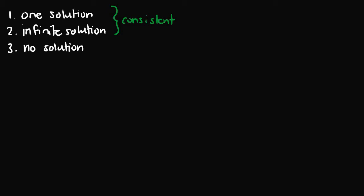In the first type — one solution — there's only one solution, so it's consistent. In the second type — infinite solutions — although there are an infinite number of solutions, it has at minimum at least one. The third type, no solution, is called inconsistent, meaning there are no solution sets that satisfy the system. We'll look at a few examples and graph systems of linear equations to figure out what types of solutions they are.